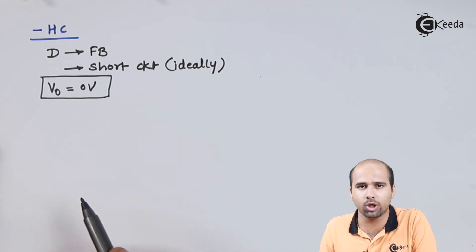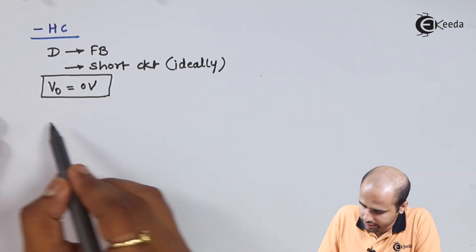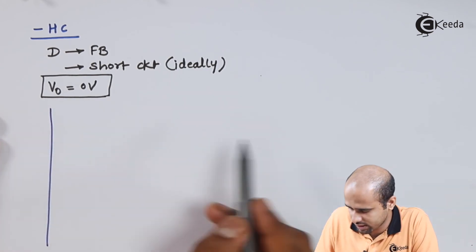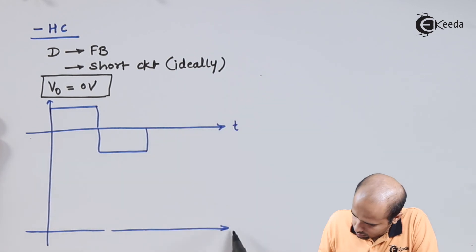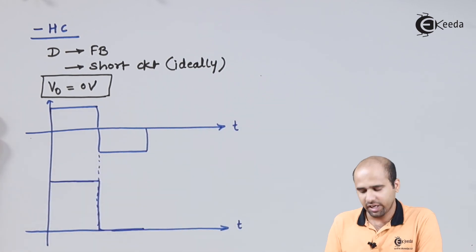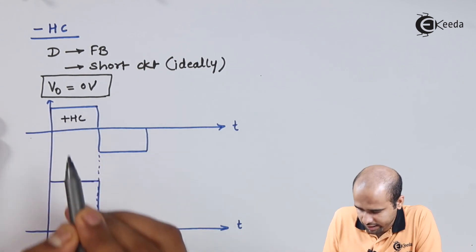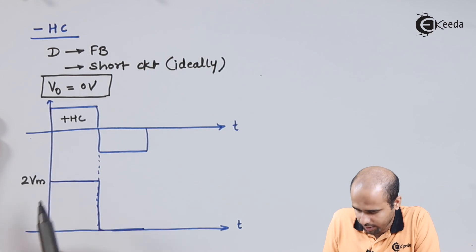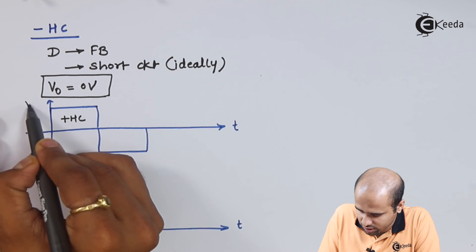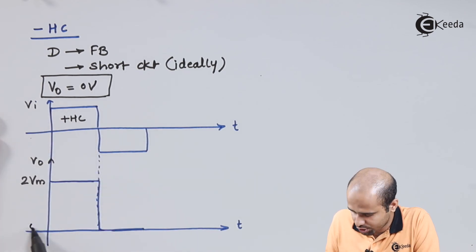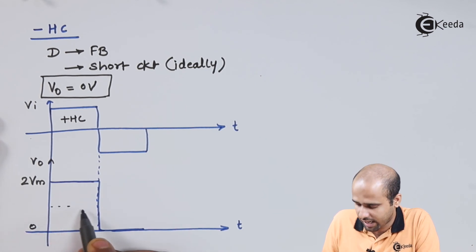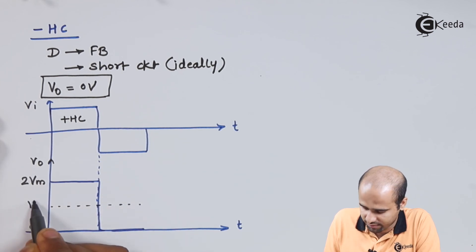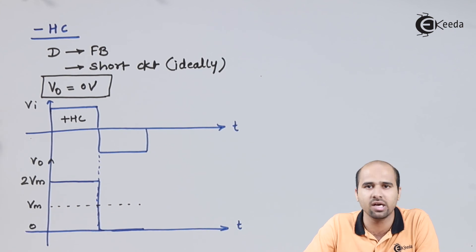In graphical terms, for the positive half cycle we get 2Vm as the output voltage, and for the negative half cycle we get 0V. The peak-to-peak value and the nature of the input signal are not changed at all. We are only changing the voltage reference level towards the positive side. That's why it is called a positive clamper.